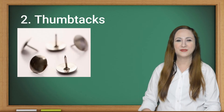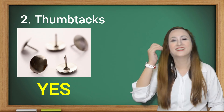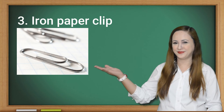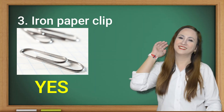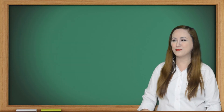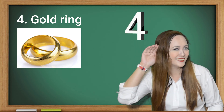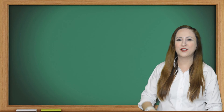Number two: tantas. Correct! Number three: iron paperclip. Correct! Number four: gold rings. Correct! Number five: nails. Correct!